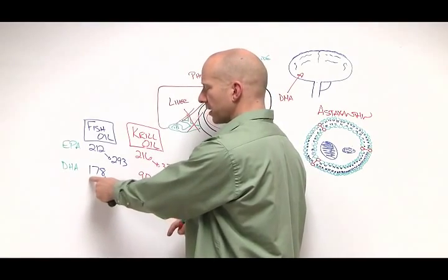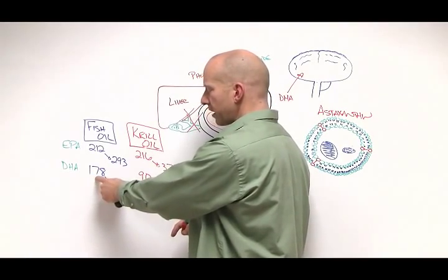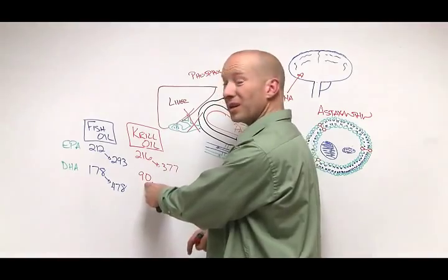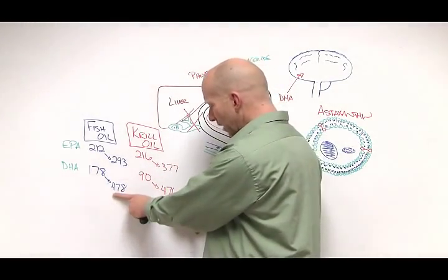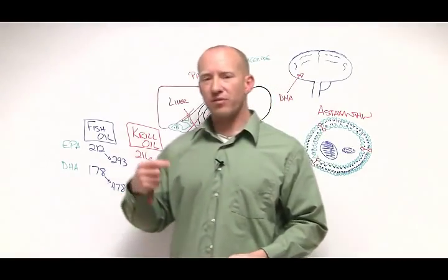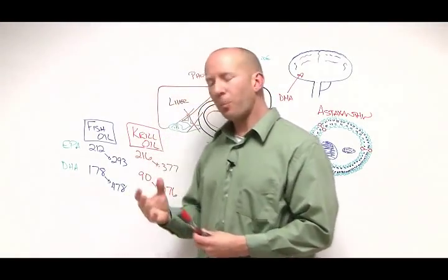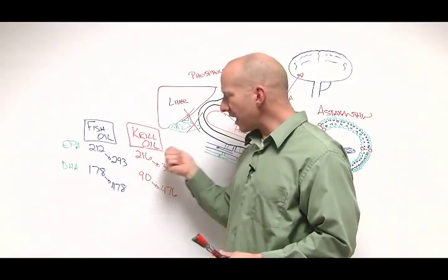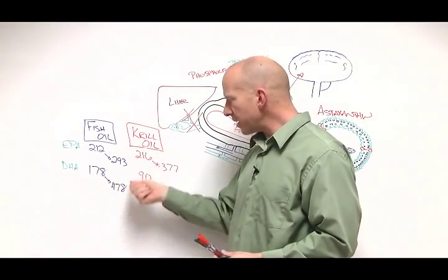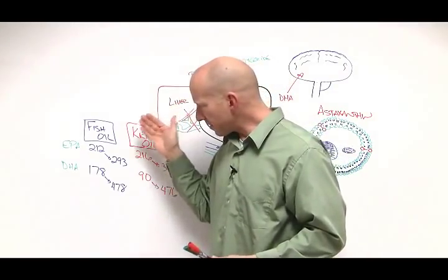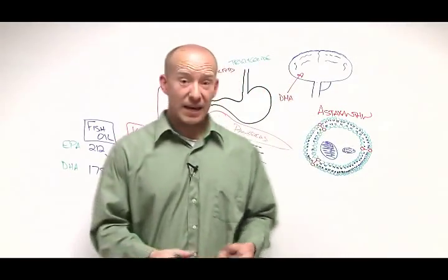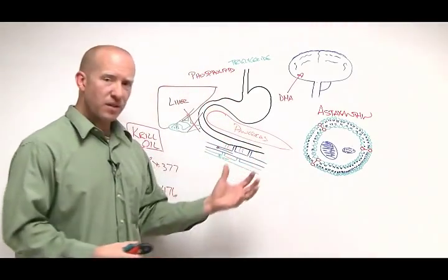The DHA is really interesting. The fish oil group was taking 178 mg a day. The krill oil group was taking only 90 mg, basically half the amount of DHA. Yet after 30 days, they had almost identical levels of blood DHA. So basically what this says is you can take less krill oil, less EPA and DHA, and yet have a higher blood level than the same amount or more in fish oil. And I believe it's because of this process here.